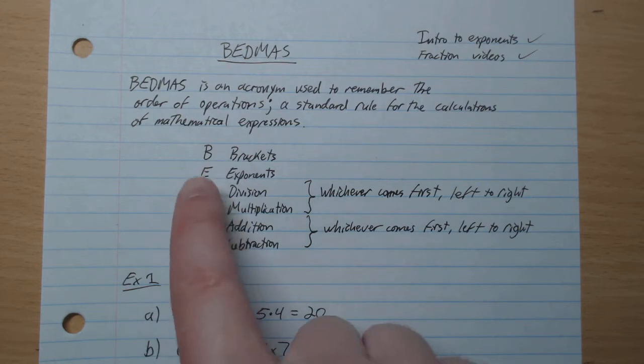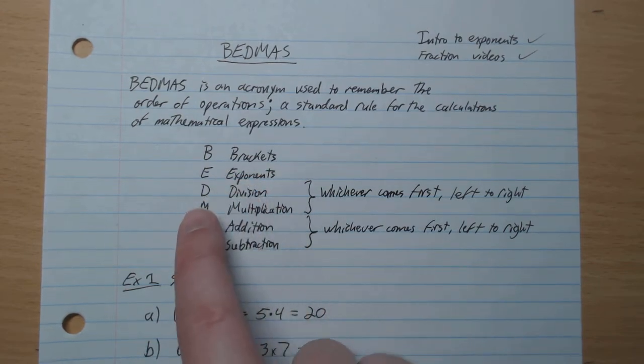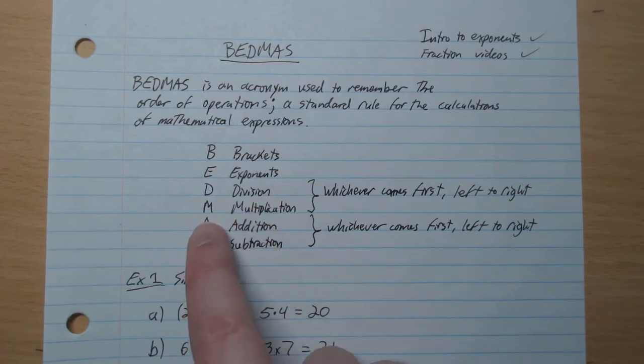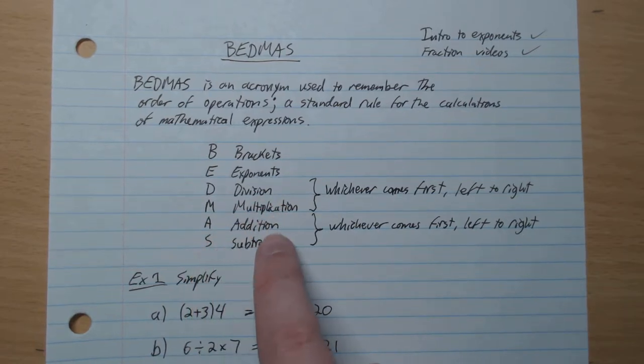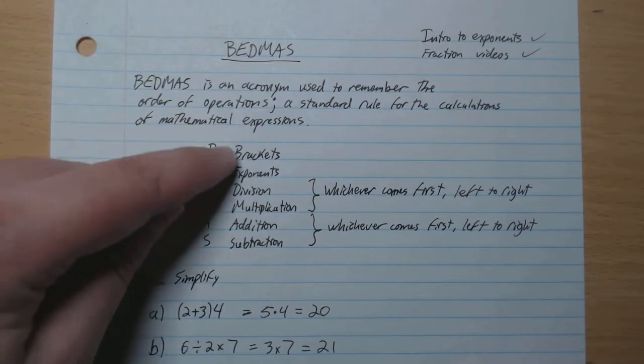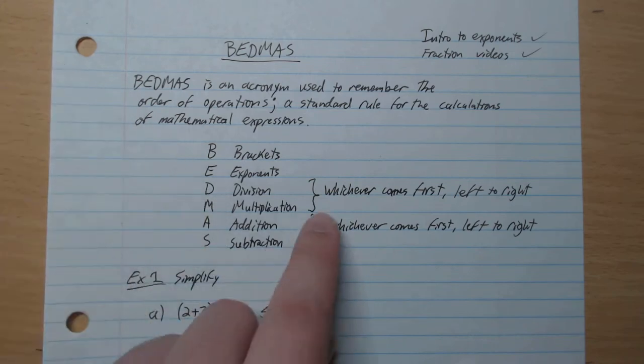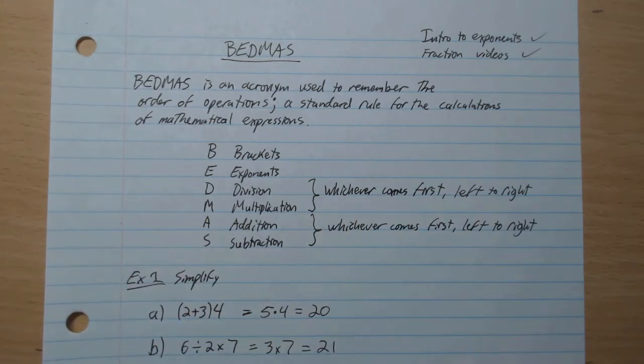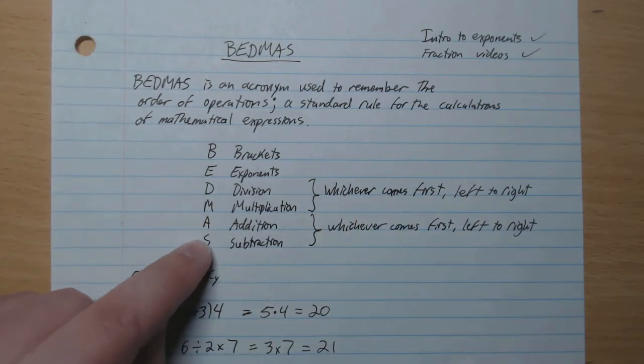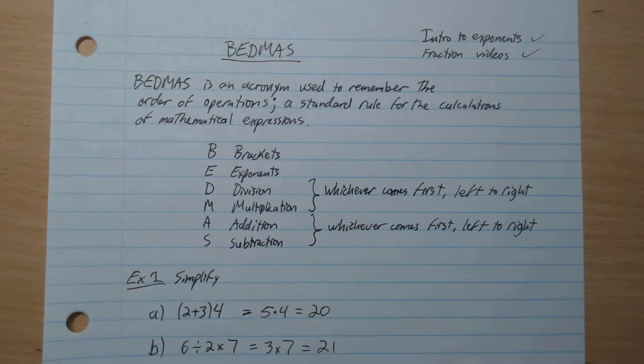So what is BEDMAS? B stands for brackets, E stands for exponents, D stands for division, M for multiplication, A addition, and S subtraction. The order is from top to bottom. Now D and M could be M or D, doesn't matter. Whichever comes first, left to right. And same with A and S. It could be S A or A S, doesn't matter. Whichever comes first, left to right.